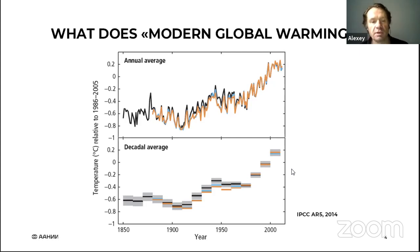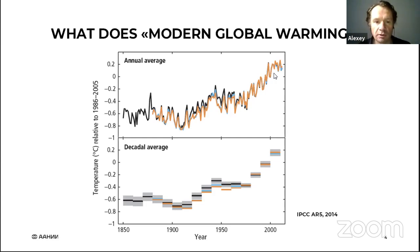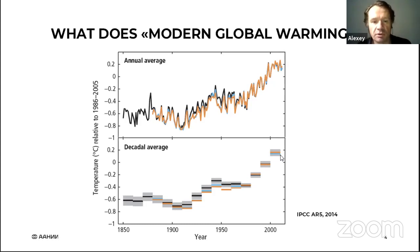There are instrumental observations of temperature everywhere on Earth — meteorological stations measuring temperature, humidity, pressure, etc. If we combine data over the past 150 years on air temperature, we observe that the temperature is growing at least since the beginning of the 20th century. Looking at two-decadal average data, each of the last five decades was warmer than the previous one. Modern global warming is simply a statement of fact — an instrumentally observed increase of air temperature on our planet.